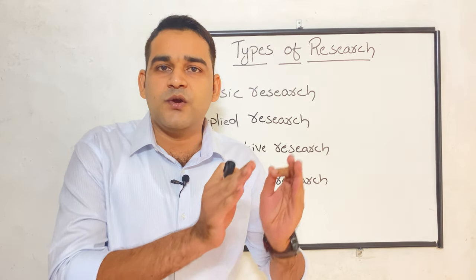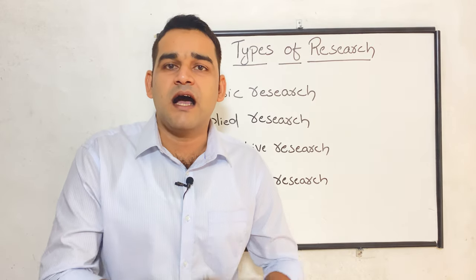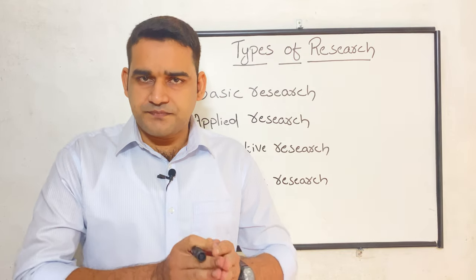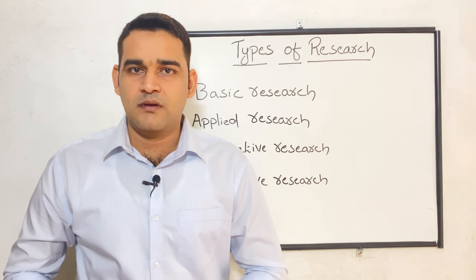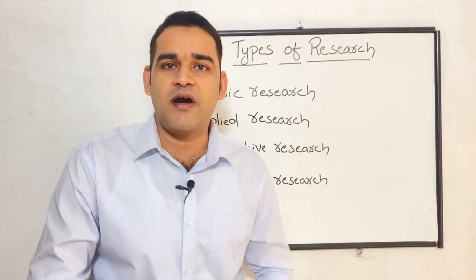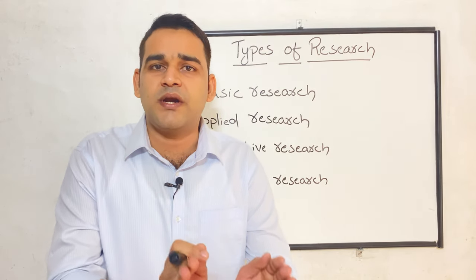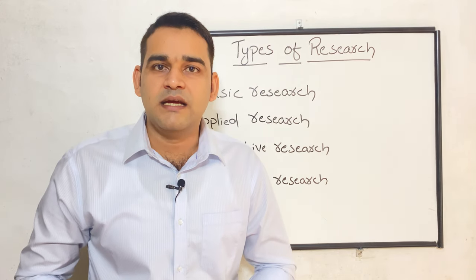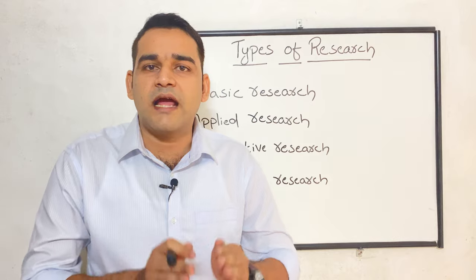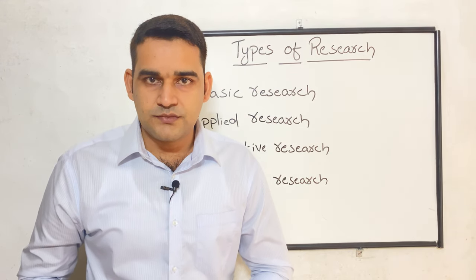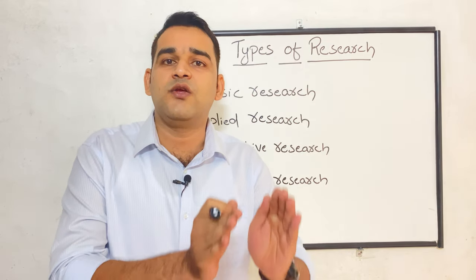The best example for basic research is Isaac Newton's theory, or Einstein's theory. As we know, everybody knows that an apple falls down — it was not a problem. But only Newton asked: what is the reason why the apple falls from the top to the bottom? It was not a problem to human beings, but he tried to understand the reason behind it, tried to generate new knowledge, and finally a new theory was discovered.